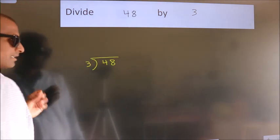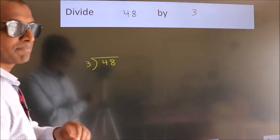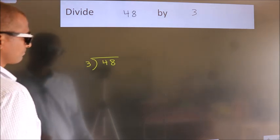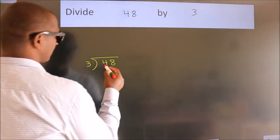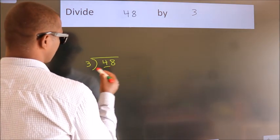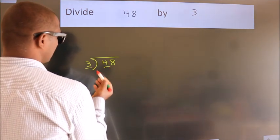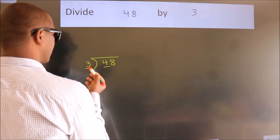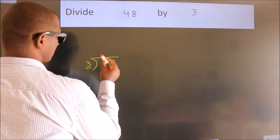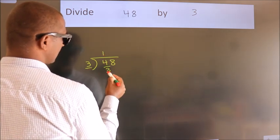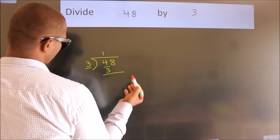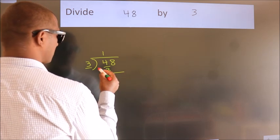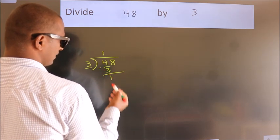This is your step 1. Here we have 4, and here 3. A number close to 4 in the 3 times table is 3 — 3 ones are 3. Now we should subtract. We get 1.